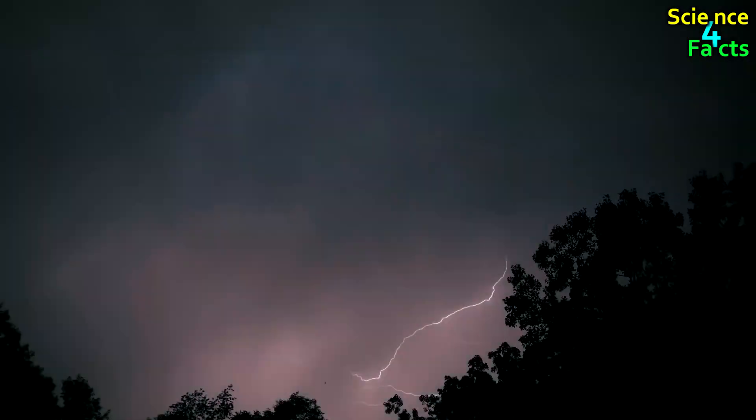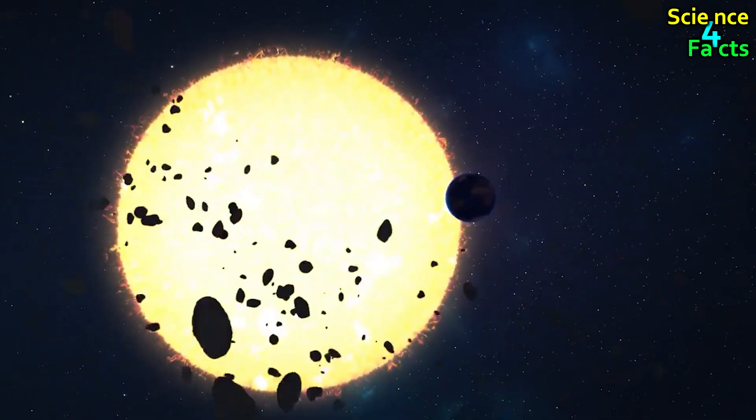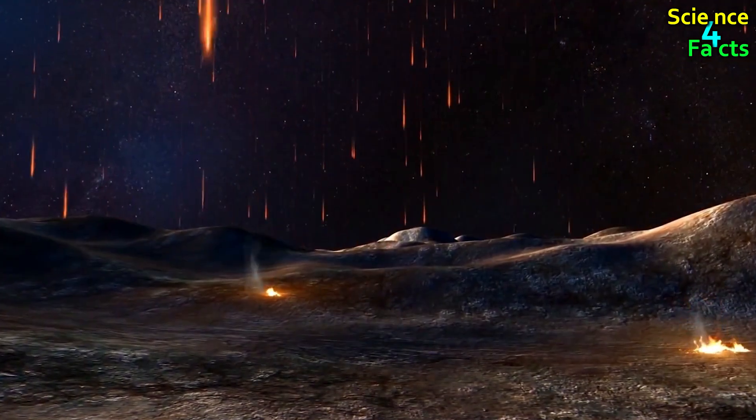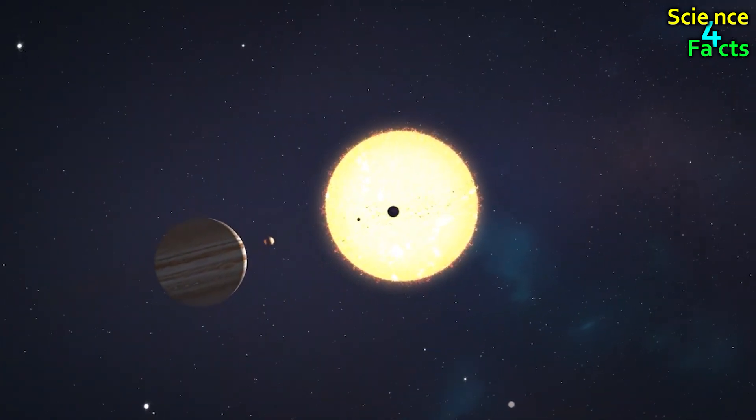However, the phenomenon of rain is not exclusive to our planet. Many planets lacking water experience rainfall. There are peculiar rains that encompass everything from sulfuric acid to gems. Today, we will explore these unusual rains that occur on various planets.